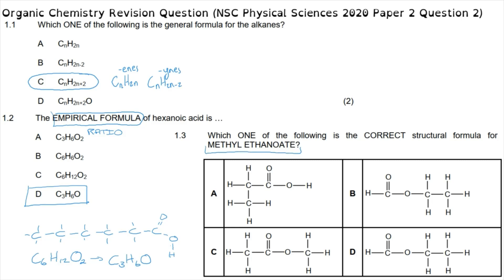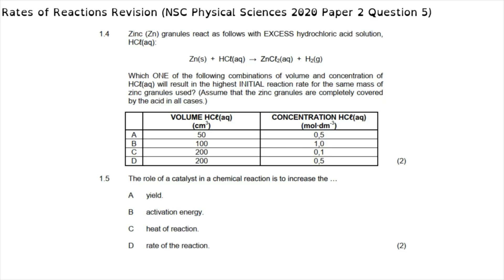Methyl ethanoate is an ester made up of two groups. The methyl part is attached only to the single-bond oxygen — one carbon attached to that oxygen. Ethanoate is attached to both the single-bond oxygen and double-bond oxygen — two carbons. Option C is correct: one carbon attached via single bond to oxygen, then two carbons with a single bond to oxygen and a double bond to another oxygen.